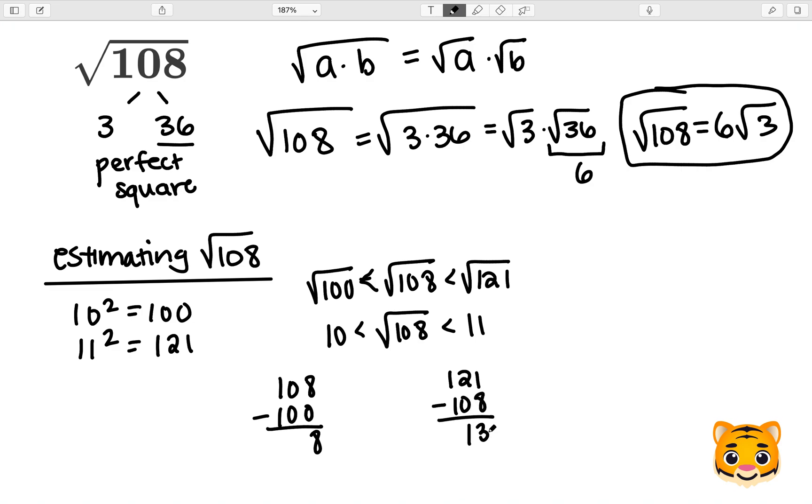As you can see, because 8 is less than 13, 108 is closer to 100, and therefore the square root of 108 is closer to 10. Now we can approximate the square root of 108 as about 10.